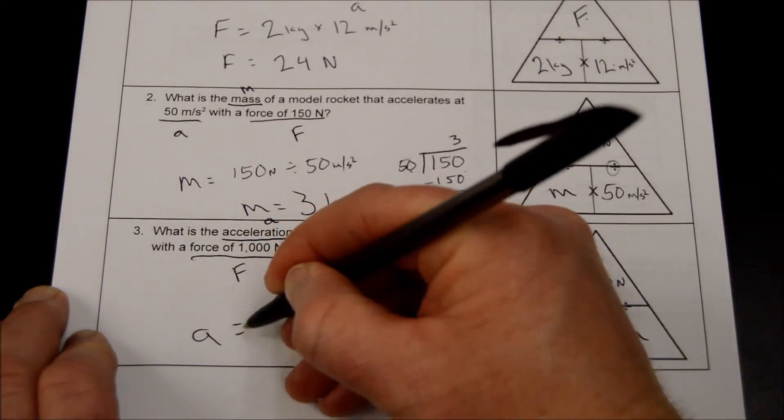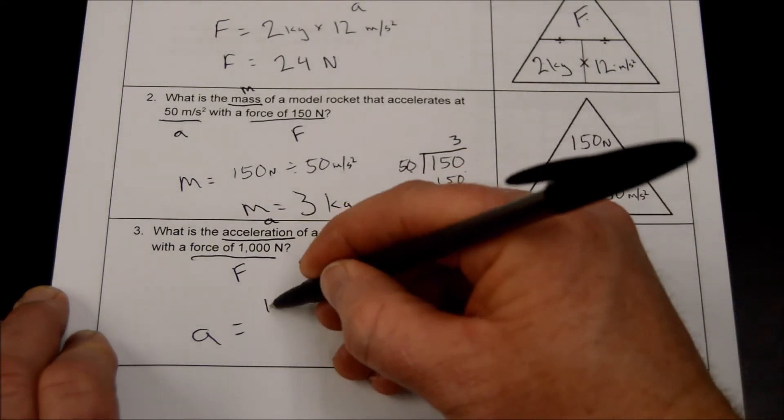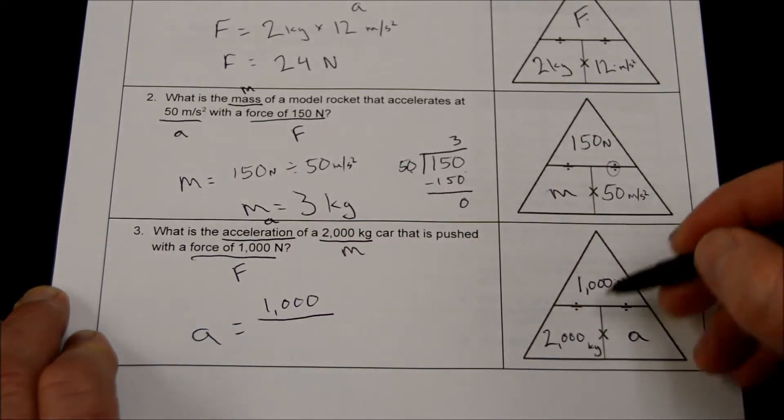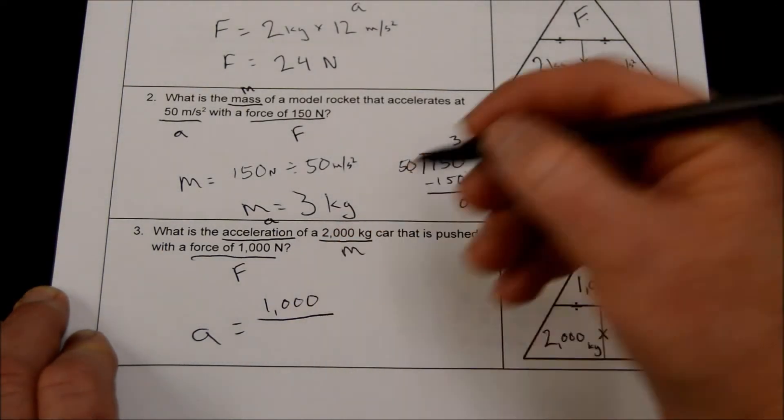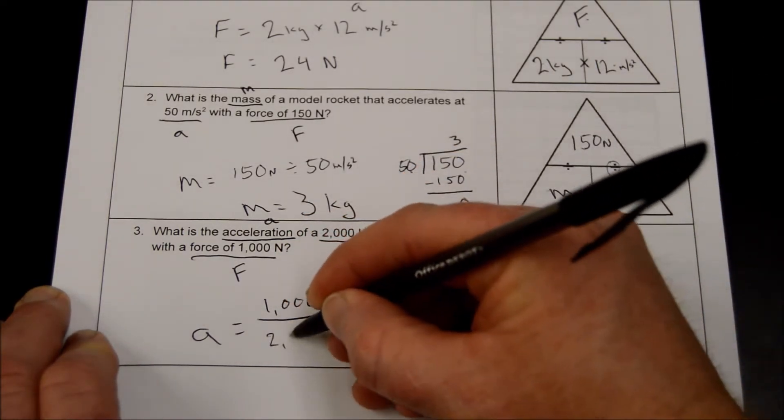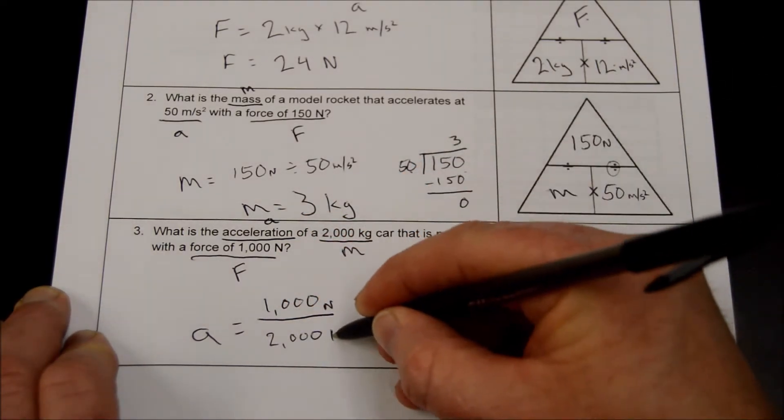My acceleration is going to be, since they're on top and bottom, I have to divide 1,000, and I'm going to write it like a fraction this time, top and bottom, and you'll see why in a minute. 1,000 newtons divided by 2,000 kilograms.